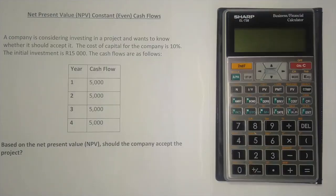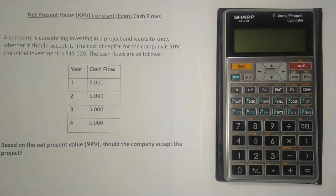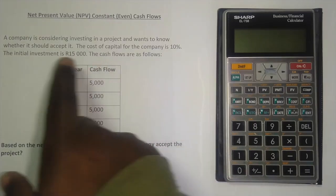Welcome to this lesson. We're going to look at how to calculate the net present value when you have constant or even cash flows using the Sharp EL-738 financial calculator. We've done a similar lesson using this calculator for uneven cash flows — you'll find the link in the description below. We've also done these lessons using tables, with the theory behind net present value — links are in the description as well.